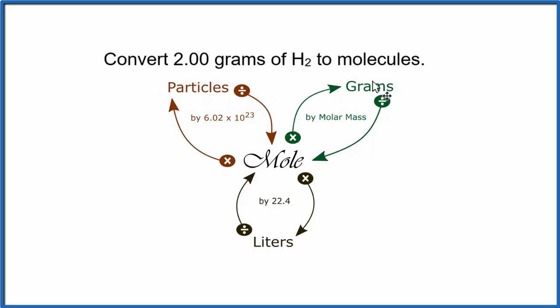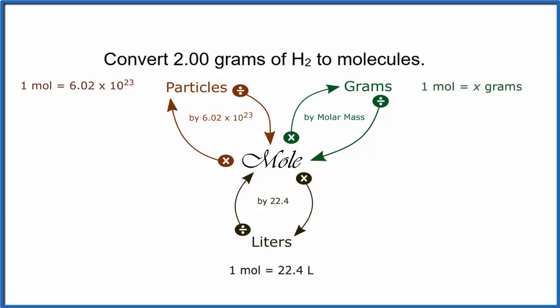So we can go from grams to moles by dividing by the molar mass, and then from moles, we can multiply by Avogadro's number to get particles. This highlights the centrality of the mole as a concept in chemistry. So let's set it up with conversion factors, but you can use the mole map to solve it as well.